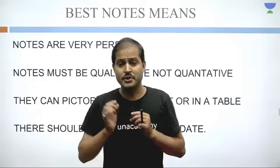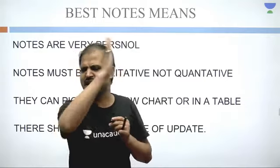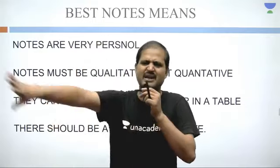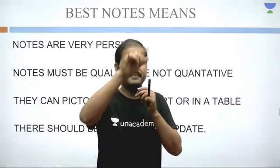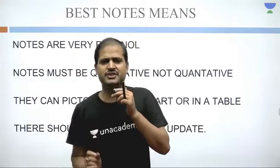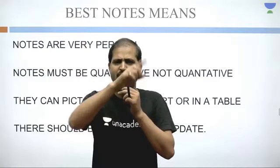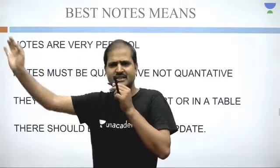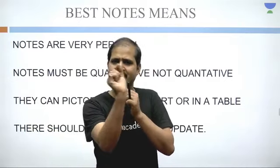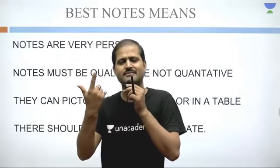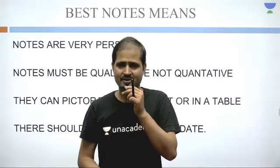Notes must be qualitative, not quantitative. Notes की quality अच्छी होनी चाहिए। एक line भी लिखो तो अच्छी हो — बेकार लिखने की ज़रूरत नहीं। उदाहरण के लिए, अगर लिखना है कि P plant में Vaxillary Estivation होता है, तो बस 'P' लिखो, dash बनाओ, 'Vaxillary' लिखो — बस। Heading या dash लगाकर उस particular word को लिख दो, यही notes हैं। Revision करते समय आपको पता होगा Vaxillary क्या है और P क्या है।